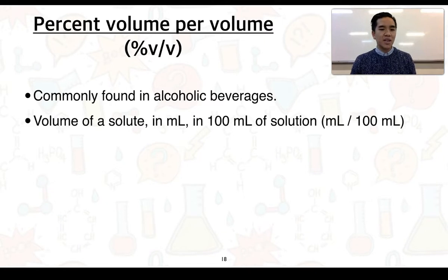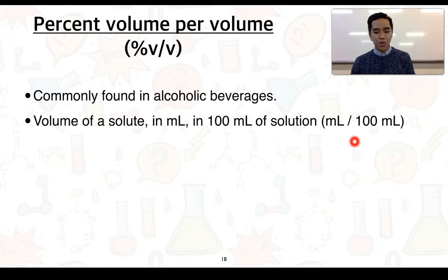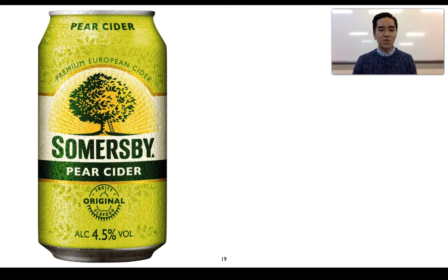Other mixtures, in particular liquid mixtures, might be represented as a percent volume per volume. An example would be in alcoholic beverages, representing the amount of solute in mils for every 100 mils of solution. This can of cider has a concentration of 4.5%, meaning it contains 4.5 mils of ethanol per 100 mils of cider.